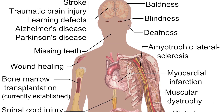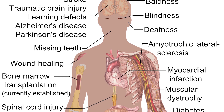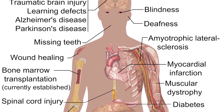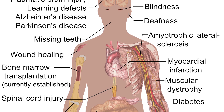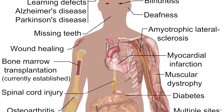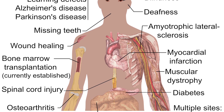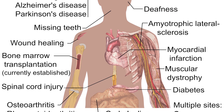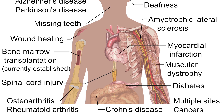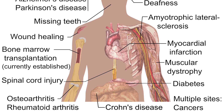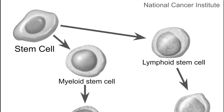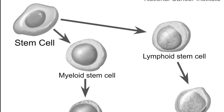Scientists hope that embryonic stem cells can be used to form any type of cell, and in 1998 two scientists managed to culture human embryonic stem cells. Scientists can extract stem cells from very early human embryos and grow them.